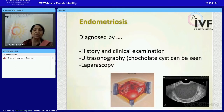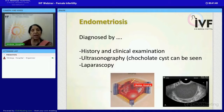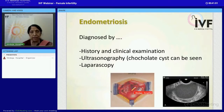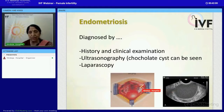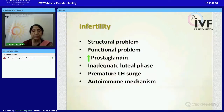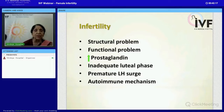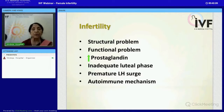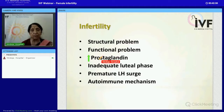Endometriosis also interferes with pregnancy. When blood from endometriosis dries up around the ovary and tube, they can become adherent to each other, to the uterus, and to the lateral pelvic wall. After structural examination, certain hormones can also be estimated — including prostaglandins, which indirectly interfere with conception.